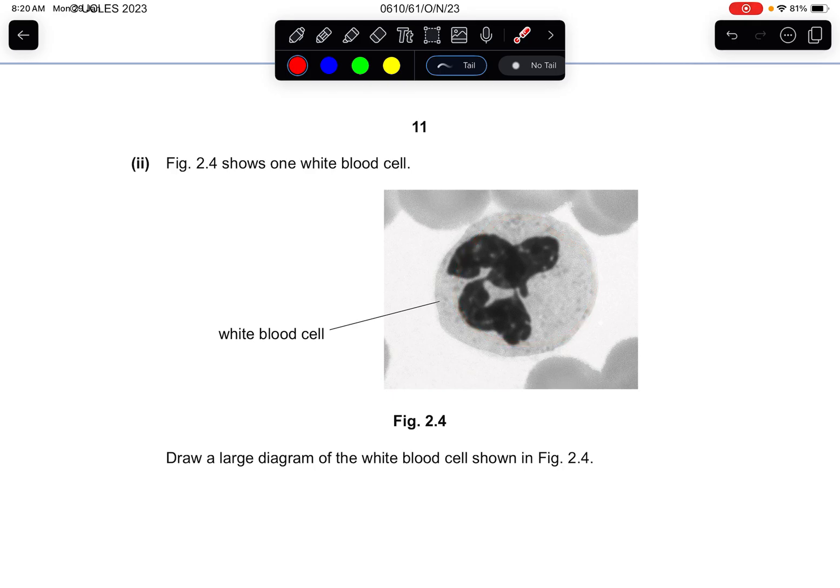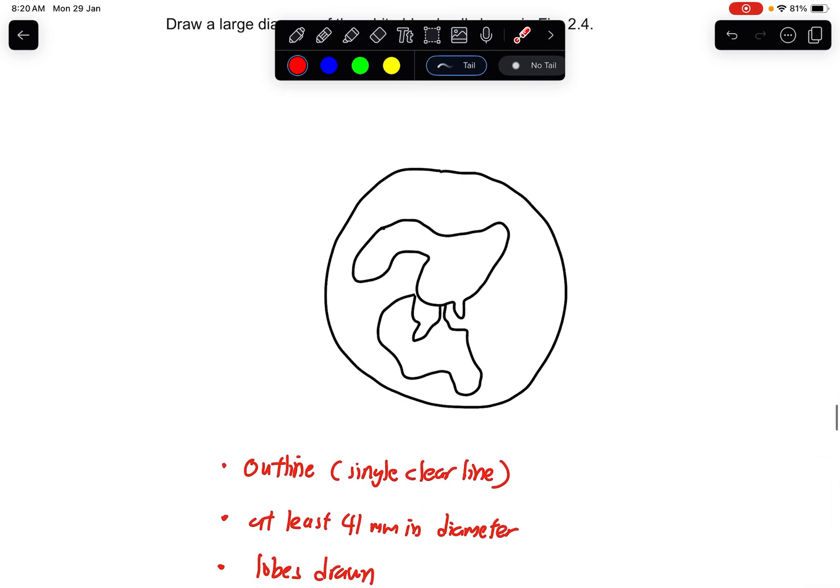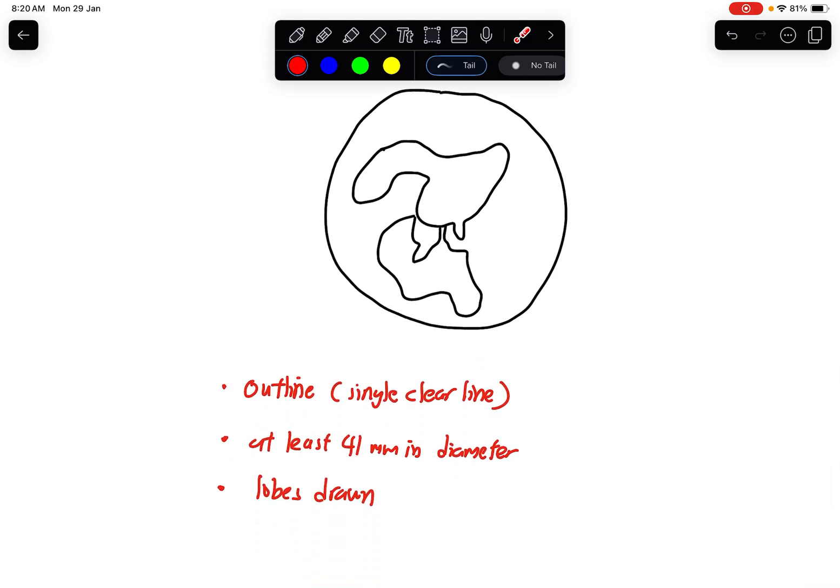Part two: Figure 2.4 shows one white blood cell. Draw a large diagram of the white blood cell shown in figure 2.4. So this is a rough sketch from me. The marking requirements for you are: outline with a single clear line with no shading, at least 41 millimeters in diameter, a small loop to the bottom right of the side of the upper section must also be drawn.